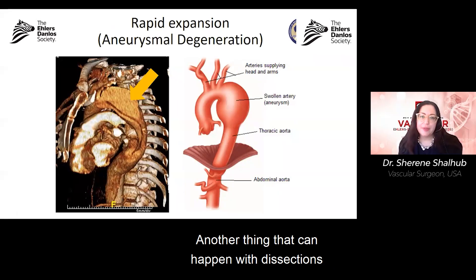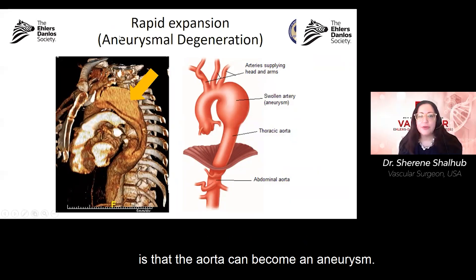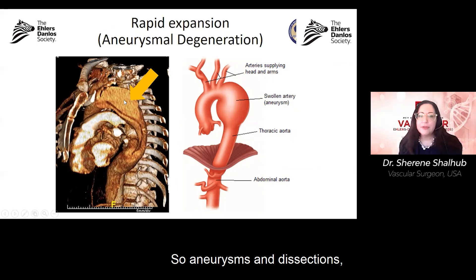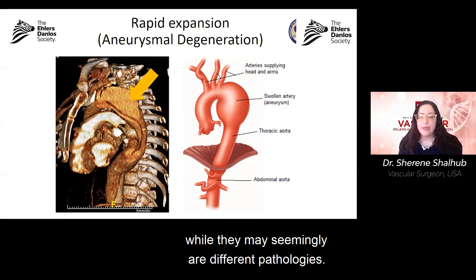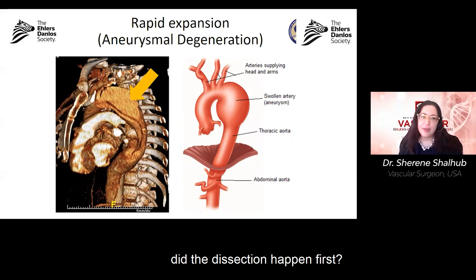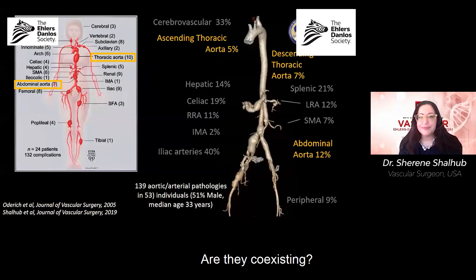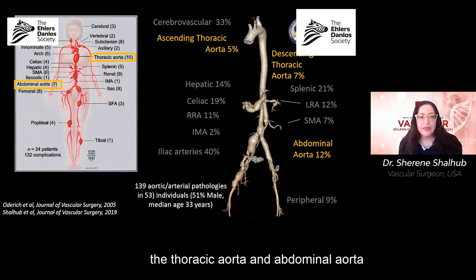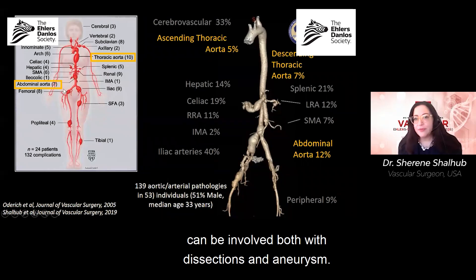Another thing that can happen with dissections is that the aorta can become aneurysmal. While aneurysms and dissections may seem like different pathologies, you really want to understand: did the aneurysm happen first? Did the dissection happen first? Are they coexisting? For vascular EDS specifically, the thoracic and abdominal aorta can be involved with both dissections and aneurysms.